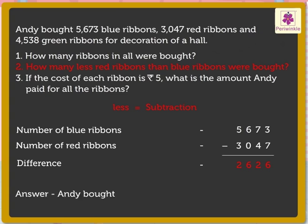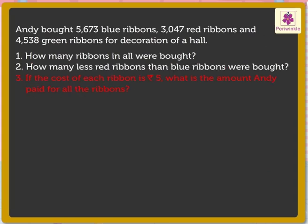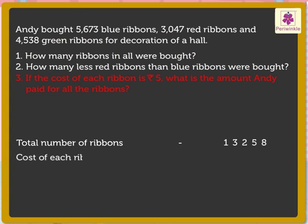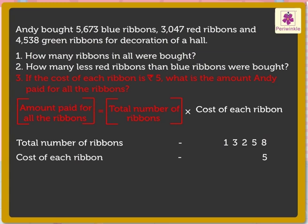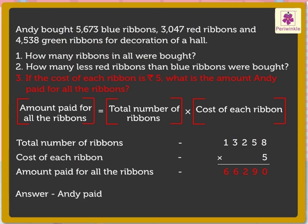Now let us find the answer to the third question: if the cost of each ribbon is 5 rupees, what is the amount Andy paid for all the ribbons? The total number of ribbons is 13,258 and the cost of each ribbon is 5 rupees. We will multiply the total number of ribbons by the cost of each ribbon. By multiplying these numbers we get the answer as 66,290. Thus Andy paid 66,290 rupees for all the ribbons.